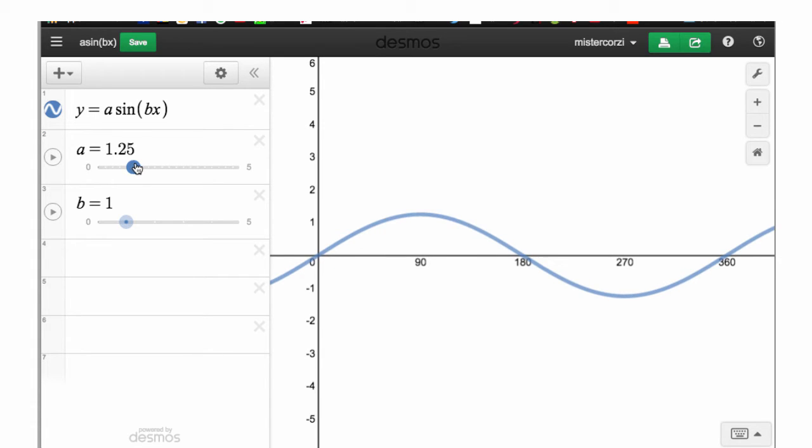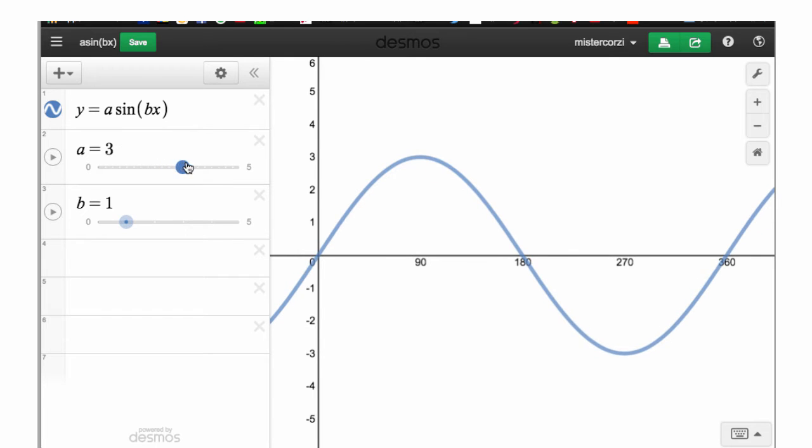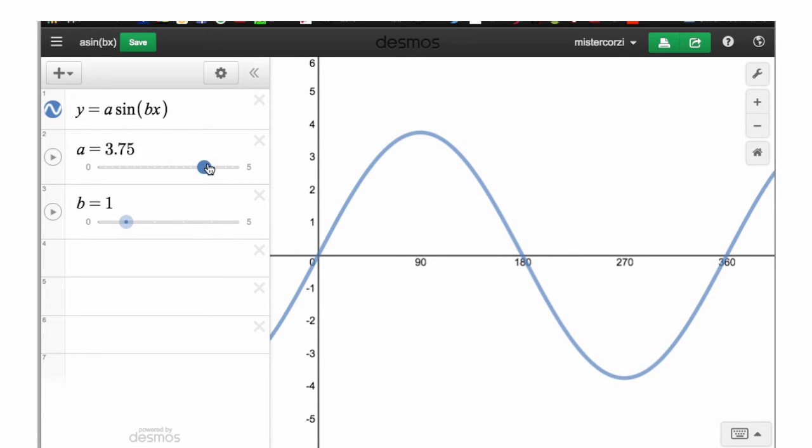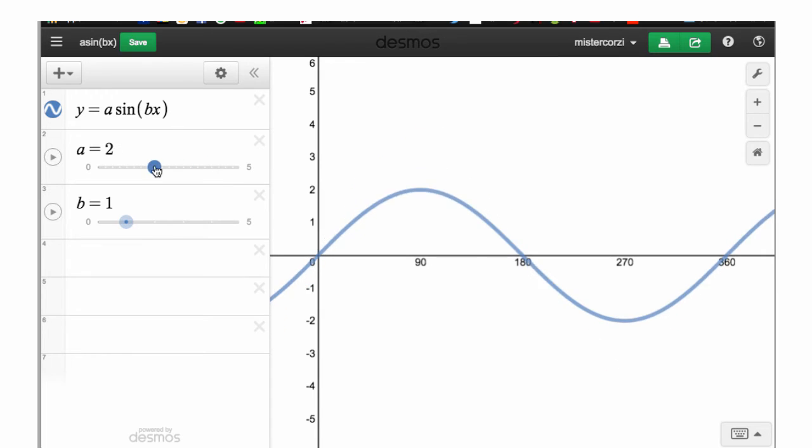Let's increase the value of a and you'll see that the amplitude of the graph is increasing. If we increase a to a value of 4, we have a sine graph that goes up to a maximum value of 4 back down to 0, minimum value of negative 4. We say that this graph has an amplitude of 4. It deviates from the mean value by 4. 4 up, 4 down.